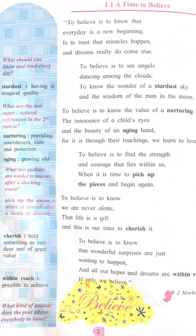Stanza two: 'To believe is to see angels dancing among the clouds, to know the wonder of the stardust sky and the wisdom of the man in the moon.' In the second stanza, the poet takes us to an imaginary world. To believe is to see angels dancing among the clouds and to know the beauty of a stardust sky — stardust meaning having a magical quality, as if magic is spread everywhere. The man in the moon will help us, meaning no matter how many problems come, every problem will be solved and happy days will surely follow.